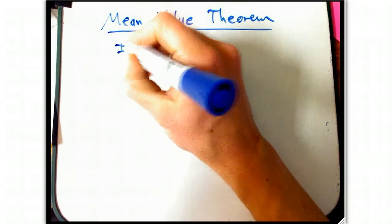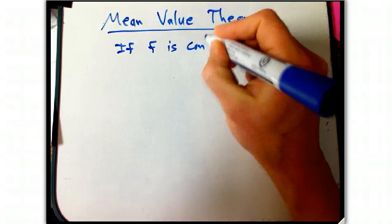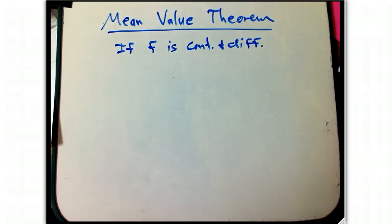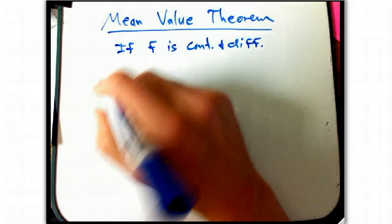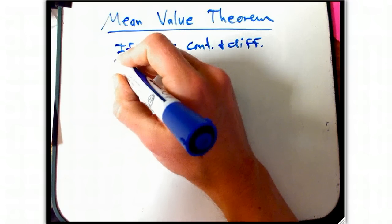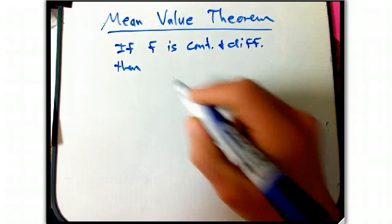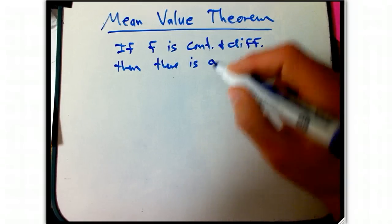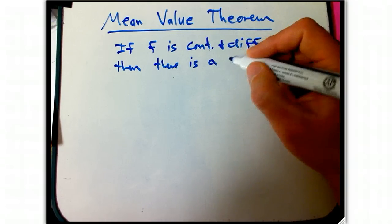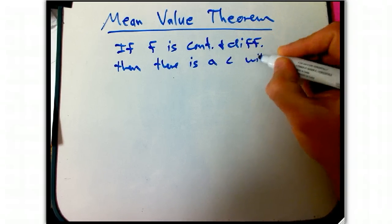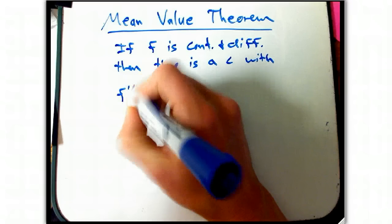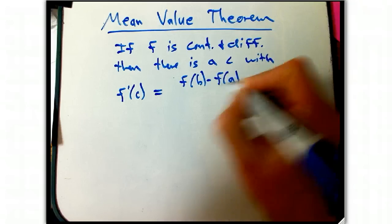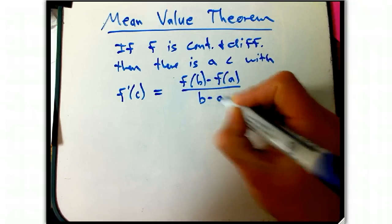So it says if f is continuous and differentiable on the appropriate intervals, I'm not going to focus on that too much, then there is, you can look up the more precise statement in the book or in the other videos. Suppose there is a c with f prime of c equal to the secant slope between a and b.